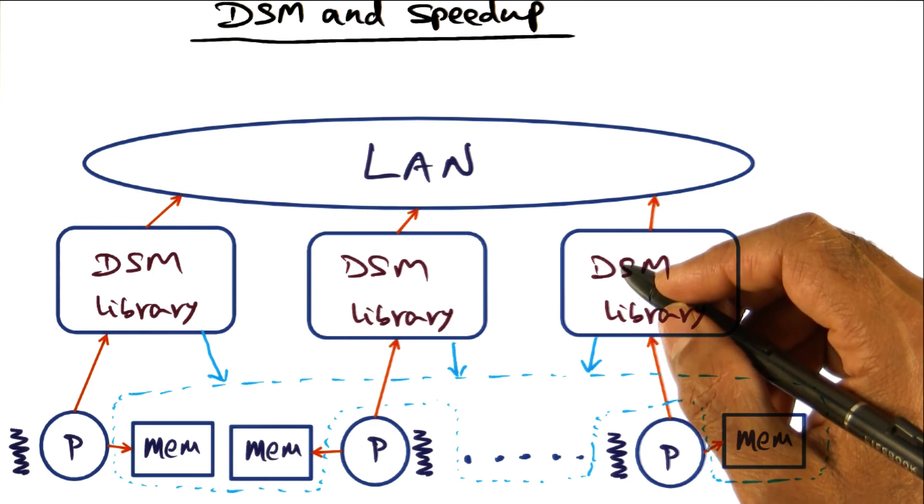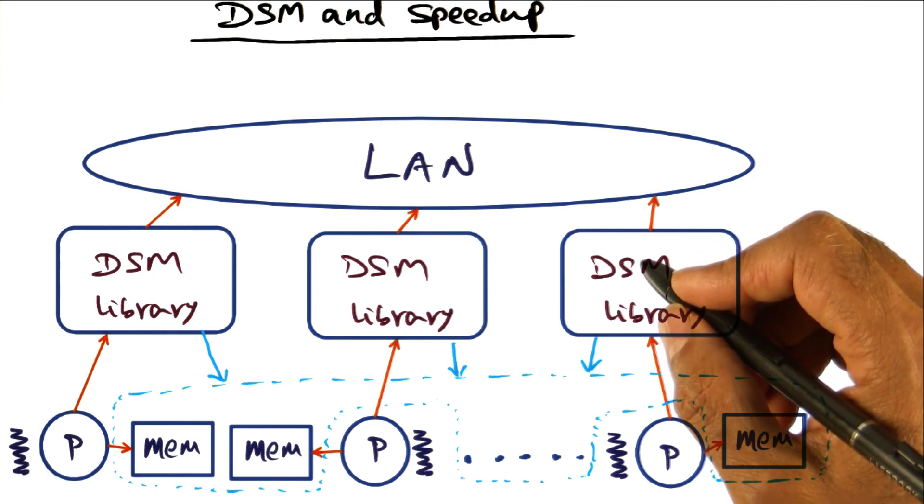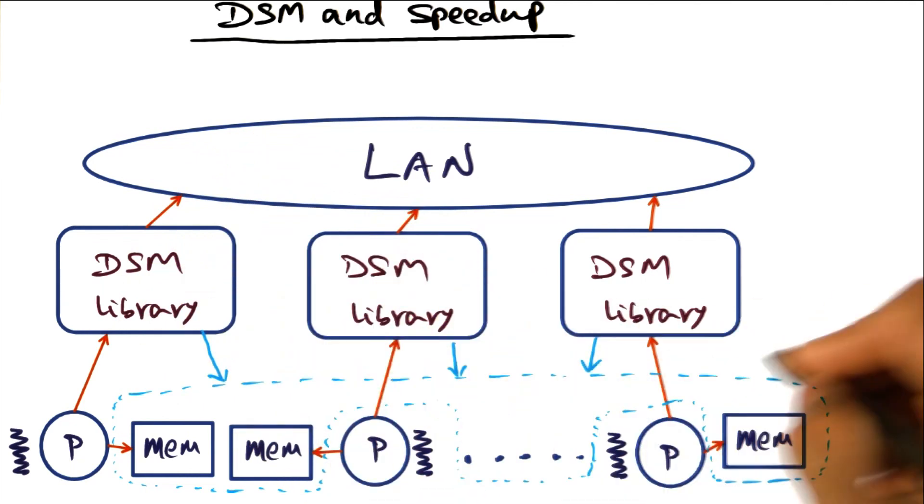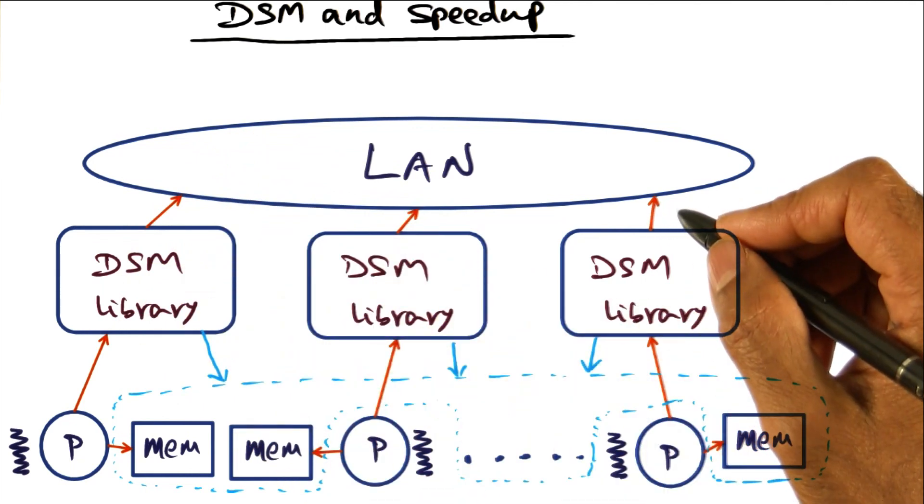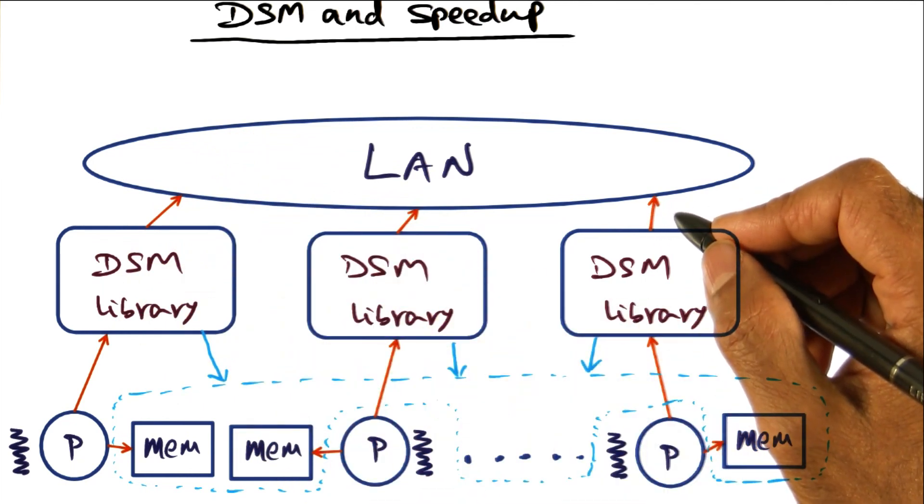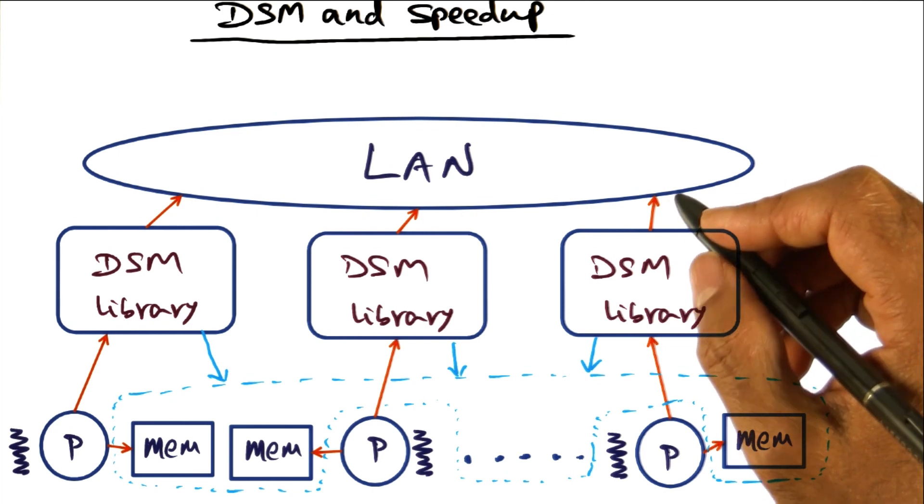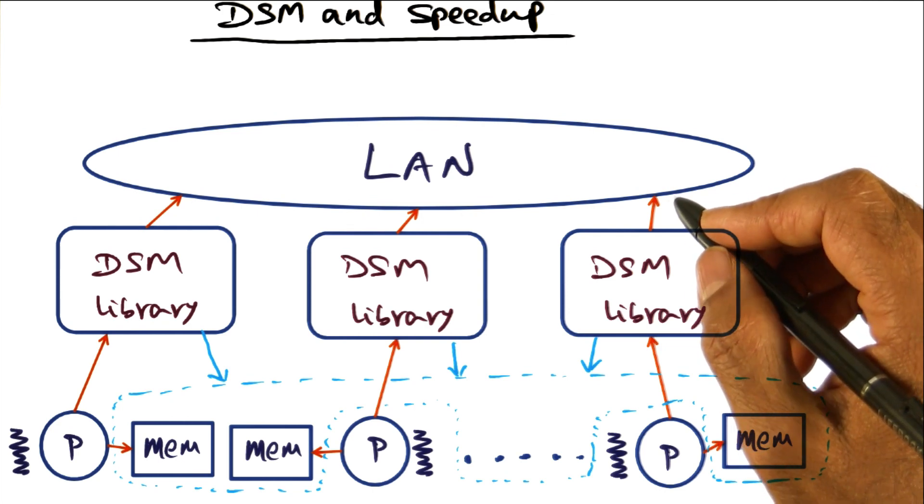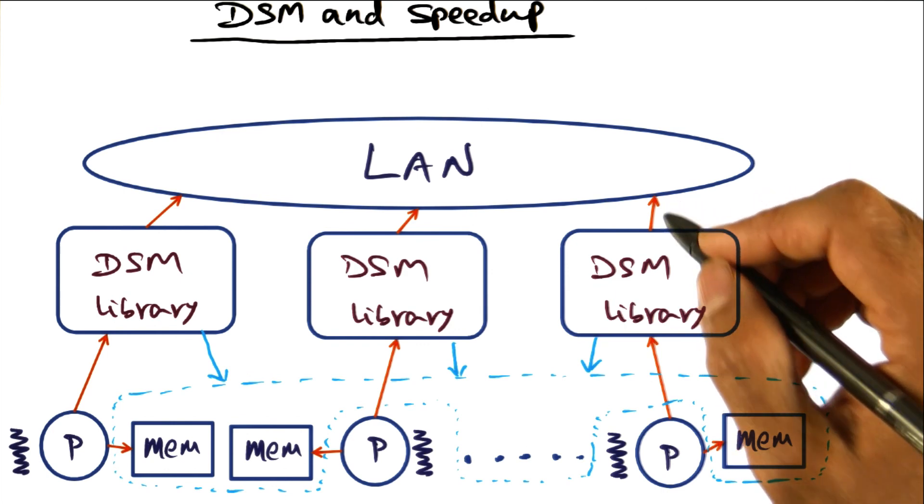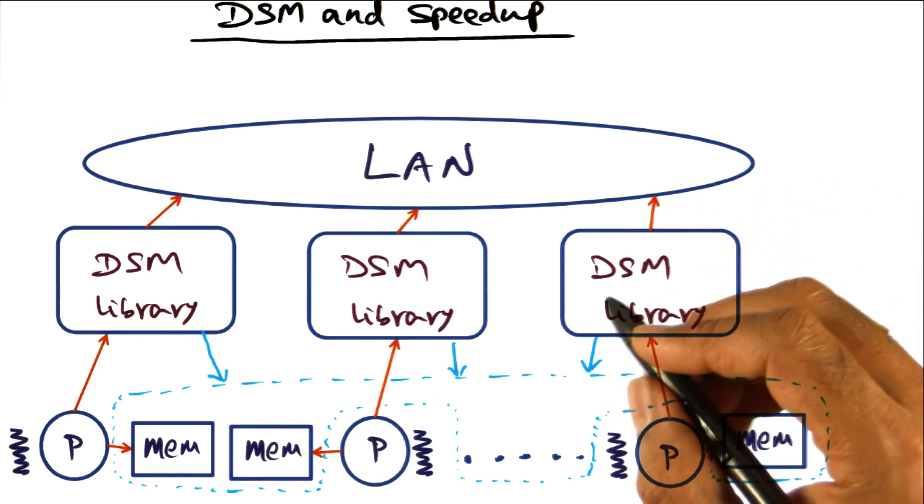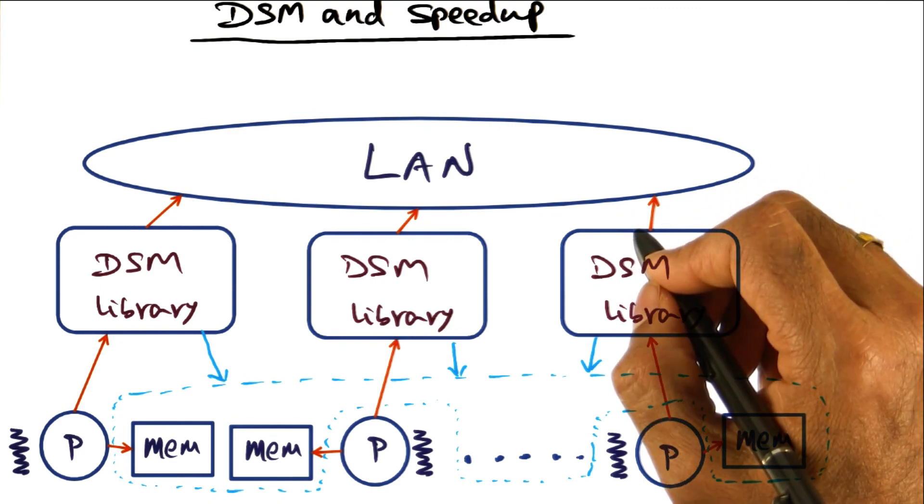So if the sharing is too fine-grained, then no hope of speed up, especially with DSM systems. Because it is only an illusion of shared memory via software, not even physical shared memory. Even physical shared memory can lead to overheads. So the illusion through software can result in even more overheads. So you have to be very careful on how you share and what you share.